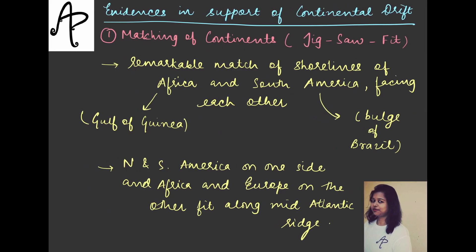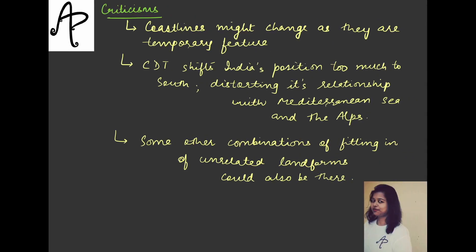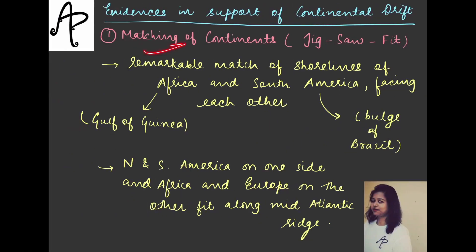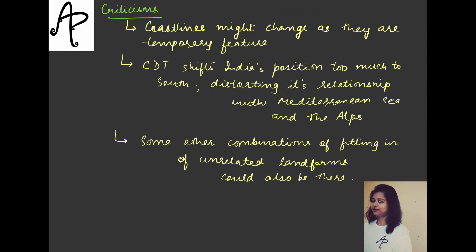Some of these evidences also received criticisms from different scholars. The reason is that in the mains examination you might be asked to write the evidences or give the criticism of this theory, so you are getting both at one place. The criticism here says that the coastlines might change as they are a temporary feature — scholars who criticize the matching of continents say that coastlines can change because they are formed where water meets land, and other factors could contribute to changes in the structure of coastlines.